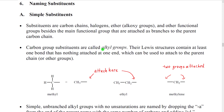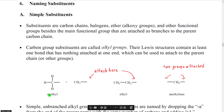Carbon group substituents are called alkyl groups. If we look at the Lewis structure of an alkyl group, what we see is that the carbon attached to the parent chain would have a complete octet, but it would have essentially an empty bond that could be used to attach to the parent chain. For example, meth as a carbon group would be called methyl, and we would see that it would have three hydrogens and then one bond available to attach to something else.